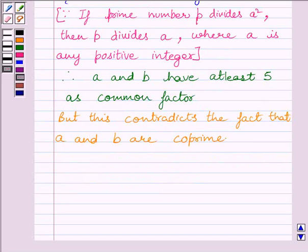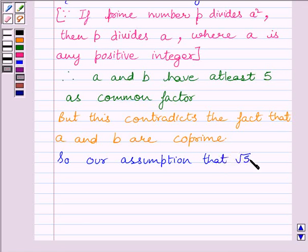So, therefore we conclude root 5 is irrational.